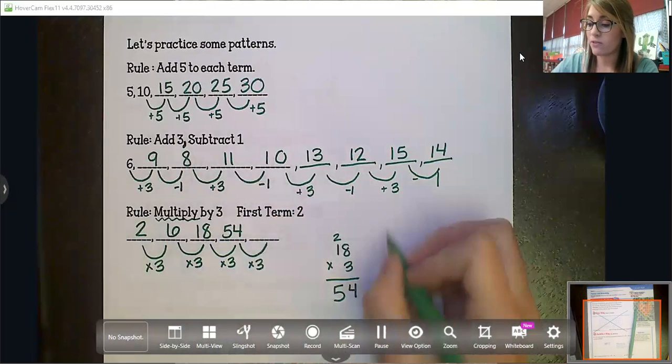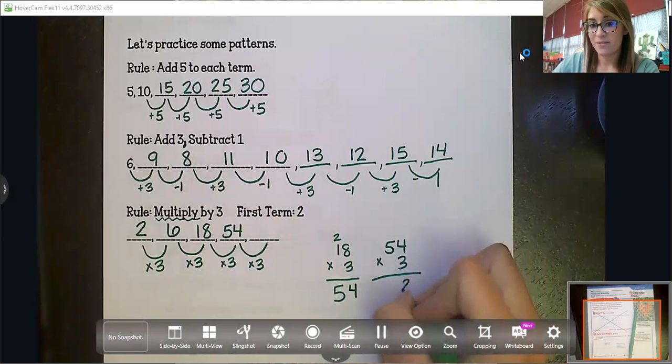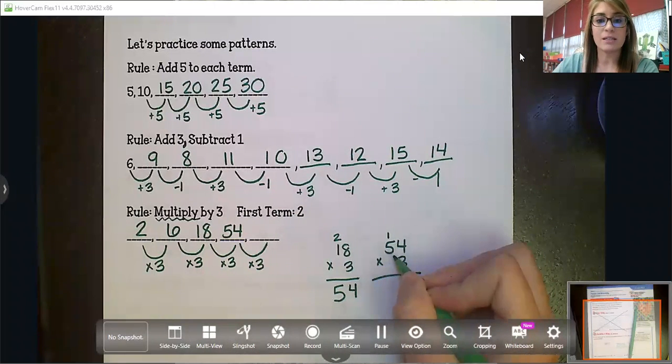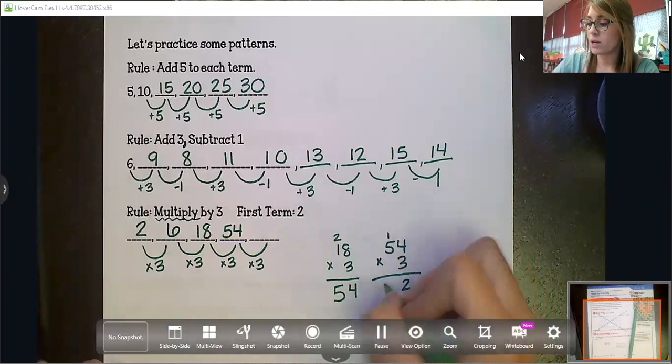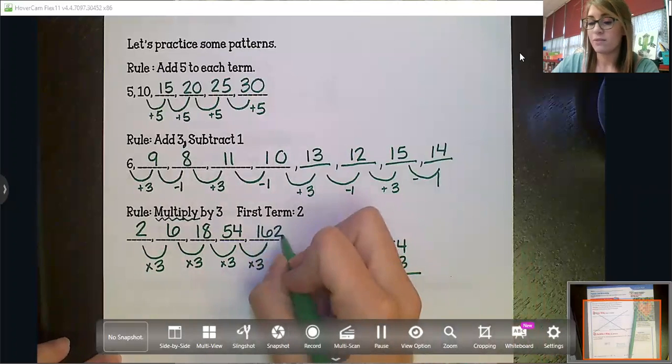And then we've still got one more term we have to find. So then we've got to do 54 times three. Three times four is 12. Five times three is 15 plus one is 16.